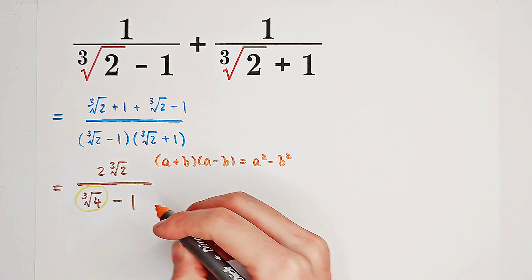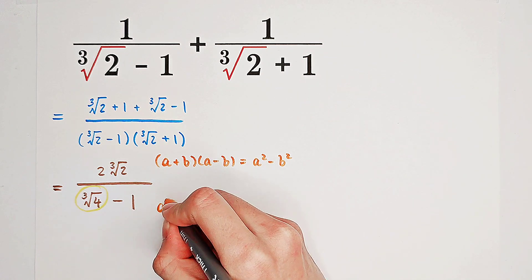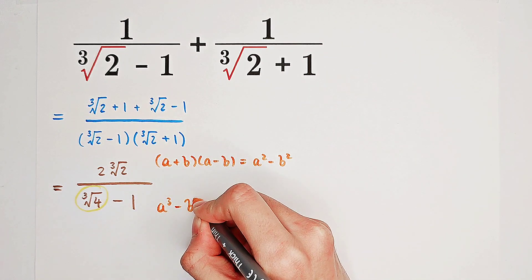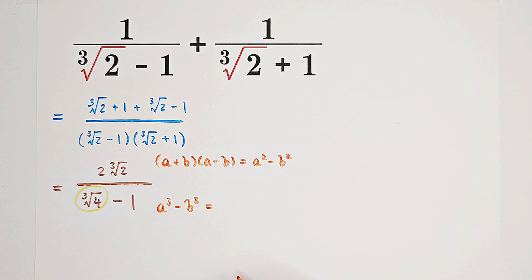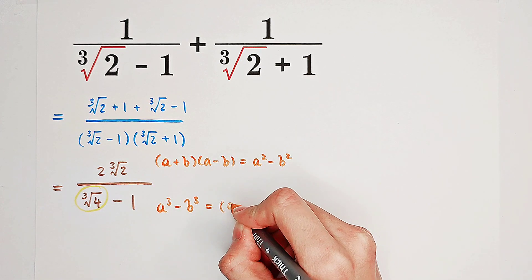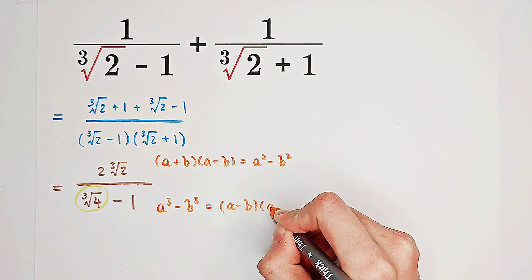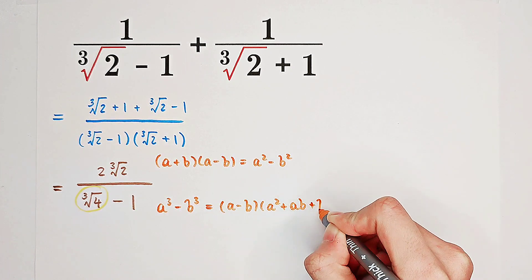Now, we need another formula, and that is a cubed minus b cubed. It is a minus b times a squared plus a b plus b squared.